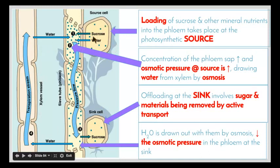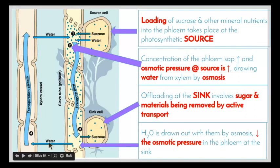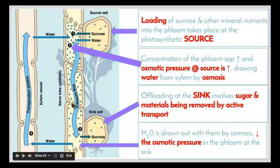So we have this constant flow: loading at the source causes sugar to move into the phloem, increasing the sugar concentration and drawing water across from the xylem. That increased water pressure pushes everything down to the sink. The concentration difference at the sink moves sugar from the phloem into the sink cell, leading to a change in concentration, so water then moves back into the xylem — and we just have this constant flow happening all the time.